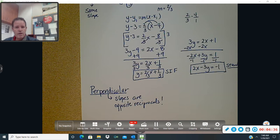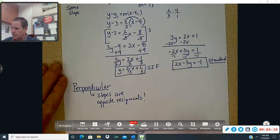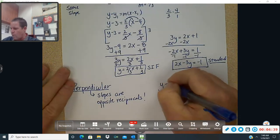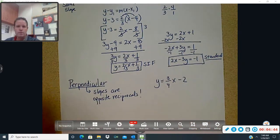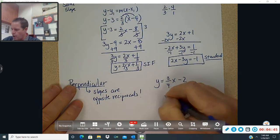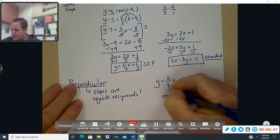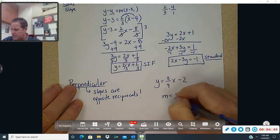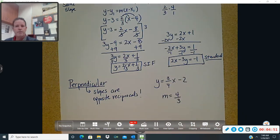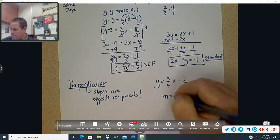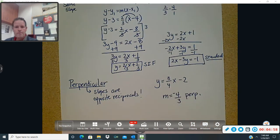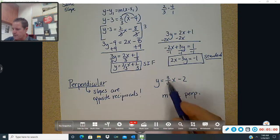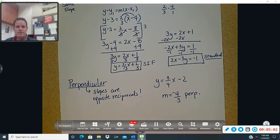Okay, so if the slopes are opposite reciprocals, and let's say they give you y equals 3 fourths x minus 2. Well, then the slope that you're going to use is going to be the reciprocal of this, which means the flip it over, 4 over 3. And then the opposite. And this would be the perpendicular slope. Okay, because again, I flipped over the slope and changed its sign.